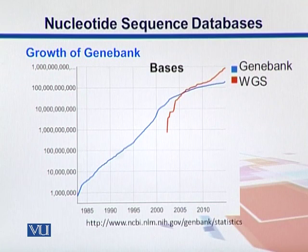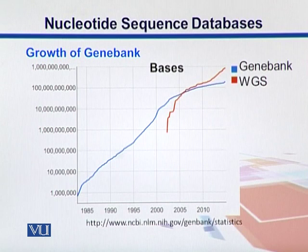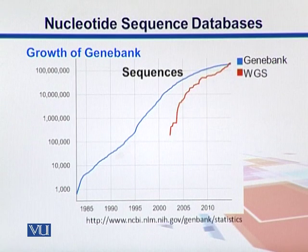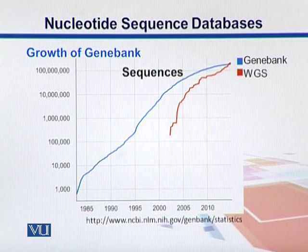If we look into the growth of GeneBank — the number of bases — they are now in the trillions, starting from somewhere in 1982. In this curve, blue represents the growth of GeneBank, and red represents the whole genome sequences, starting somewhere in 2003 or 2004 after the publication of the Human Genome Project. The number of bases seems to double every 18 months — the growth is huge, exponential. Similarly for sequences, there were thousands in 1982, but now there are more than 100 million sequences in GeneBank.